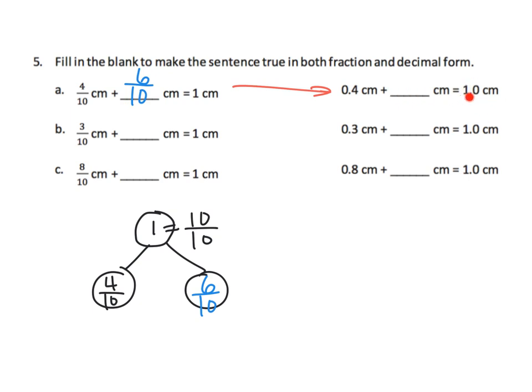What is six tenths as a decimal? That's 0.6. The rest of these problems are the exact same. It may help students to write a number bond in order to find the missing value, but I think students can do it without the number bond.